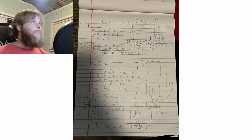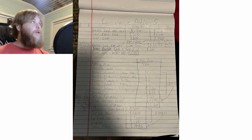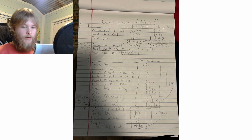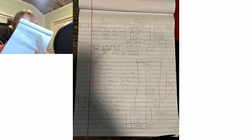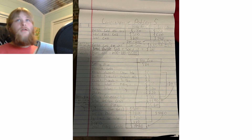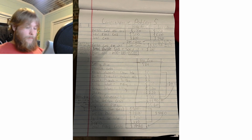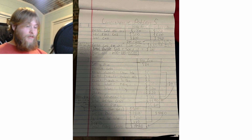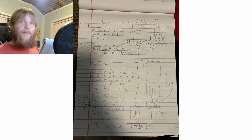This is Joshua Self, and I'm going to be explaining comprehensive problem number five. I'm also going to be reading off my actual paper because I have a hard time reading my own handwriting, so sorry about that.